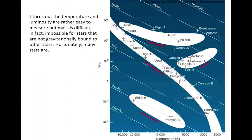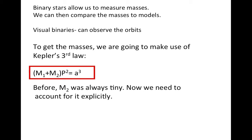Fortunately, many stars are in multiple star systems. Binary stars allow us to measure masses. We can then compare the masses to models and use these models to infer the masses of other stars from other properties. In visual binaries, where we can see both stars separately, we can observe the orbits.